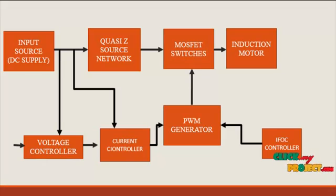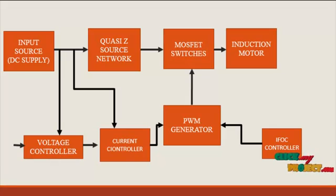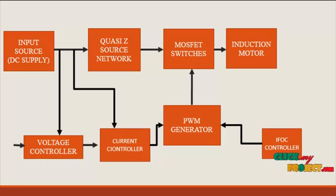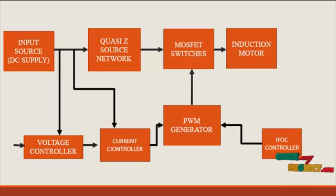Then the signal is fed into the current controller, and also the current value is obtained from the input side. The error value is compared in the current controller, and then that is fed into the PWM generator. Also the IFOC indirect field oriented controller gets some values from the output side, which are processed in its inner blocks, and then fed into the PWM generator.